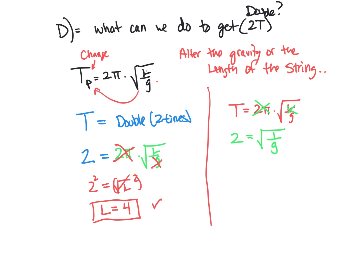So what we have to do now is we're going to square both sides. That gives me 4. And this gives me 1 over G. So therefore, solving for G, the gravity would have to be decreased or be one-fourth the original.